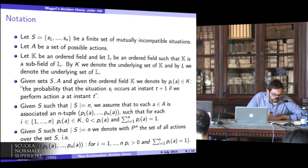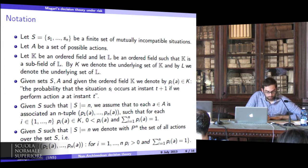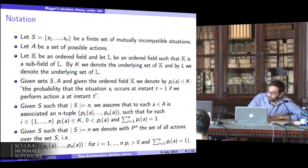We associate to each A a sequence p_1(A) up to p_n(A) such that the sum of these probabilities is 1. Given a set S with cardinality n, we denote by P_n the set of all actions over S.